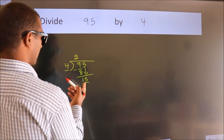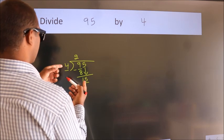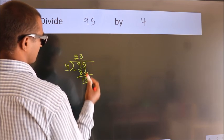So, 15. A number close to 15 in 4 table is 4 threes, 12.